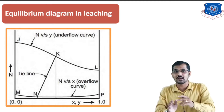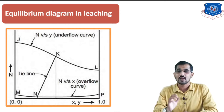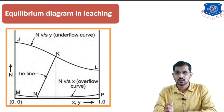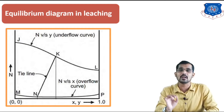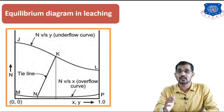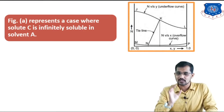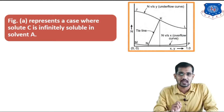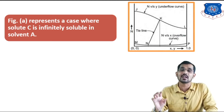In leaching we are getting two streams — the overflow and the underflow. The required component which you want to remove from the solid is present in the overflow. So the required stream is the overflow, given by M and p. Now for some important points: the solute C, which you want to remove from the solid, is infinitely soluble in solvent A. That is why the composition of the solute is spread over the entire range of the weight fraction, from 0 to 1.